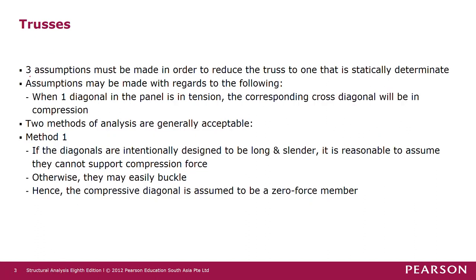Three assumptions must be made in order to reduce the truss to one that is statically determinate. Assumptions may be made with regards to the following: when one diagonal in a panel is in tension, the corresponding cross diagonal will be in compression. There are two methods of analysis that are generally acceptable. Method 1 is that if the diagonals are intentionally designed to be long and slender, it is reasonable to assume they cannot support compression force — otherwise they may easily buckle — hence the compressive diagonal is assumed to be a zero force member.